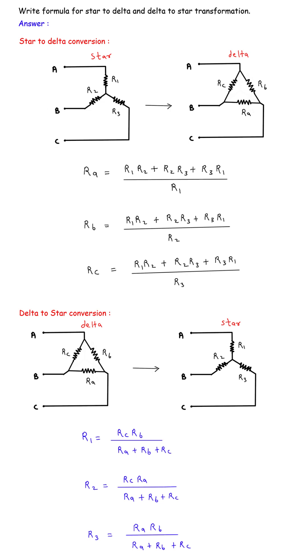To convert to delta, we calculate the delta resistors RA, RB, and RC using these formulas. Each delta resistor is found by multiplying two star resistors, adding all the star products, and dividing by the opposite resistor.